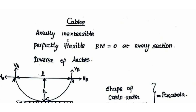The next point is perfectly flexible. If a cable is subjected to any bending moment at every section, there will be bending moment and shear. But a cable is perfectly flexible — meaning it will not be subjected to any shear or bending moment at any section of the cable.